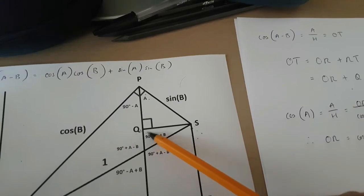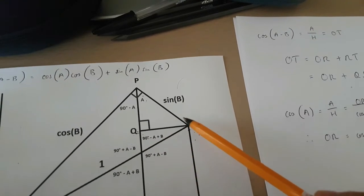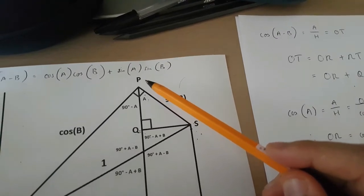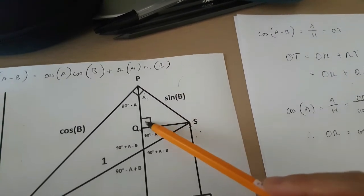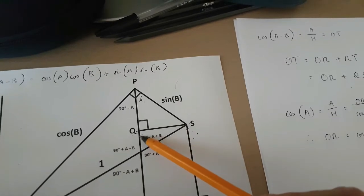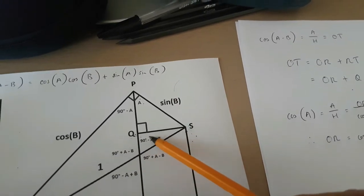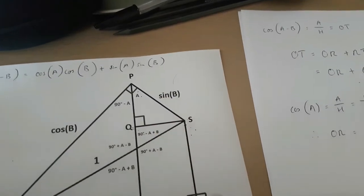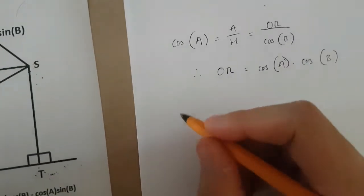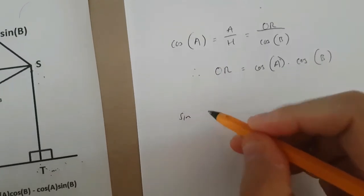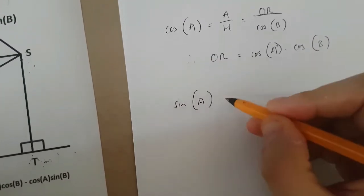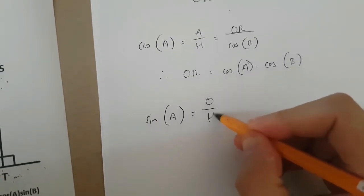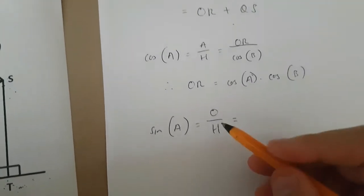QS is a length related to the triangle, which is a right-angled triangle, PQS. And it's actually the opposite side when you've got sin(A). So let's write down sin(A) over here, and let's make this equal to opposite over hypotenuse.